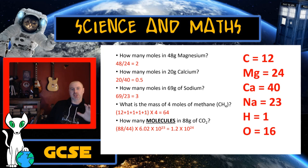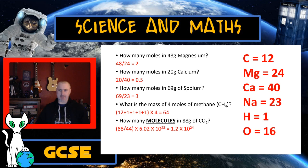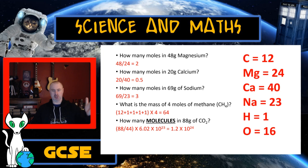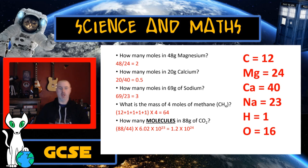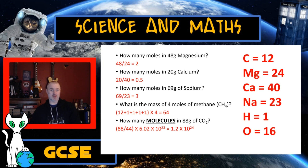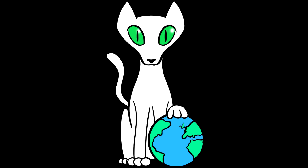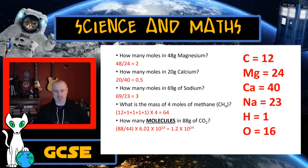Question 4: What is the mass of 4 moles of methane? First find the mass of one mole of methane. Carbon is 12, and methane has four hydrogens each with mass 1. So 12 + 1 + 1 + 1 + 1 = 16. One mole of methane = 16 grams. Four moles = 16 × 4 = 64 grams. Always remember to put your units on!